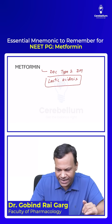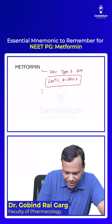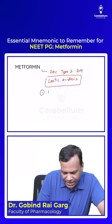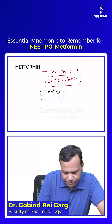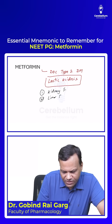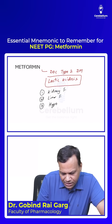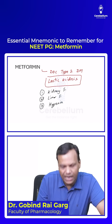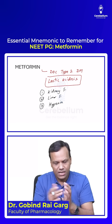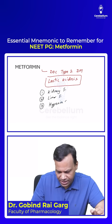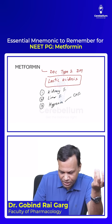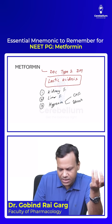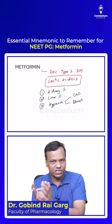So where is it contraindicated? It is contraindicated in patients with kidney failure, patients with liver failure, and patients who are predisposed to hypoxia — where there is lesser oxygen — such as patients with congestive heart failure, patients in shock, or any patient with risk of hypoxia.